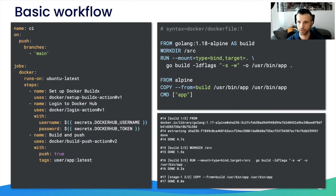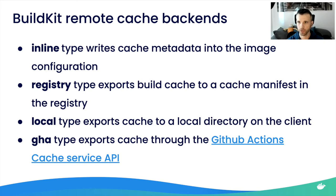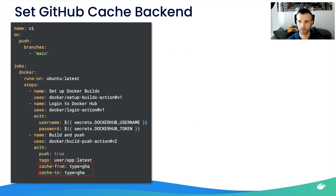We can do better. BuildKit has several remote cache backends available: inline (writes cache metadata into the image configuration), registry (exports build cache to a cache manifest in the registry), local (exports to a local directory on the client), and the GHA type that exports cache through the GitHub Actions Cache Service API — that's the one we're going to use.